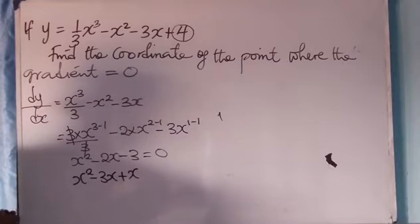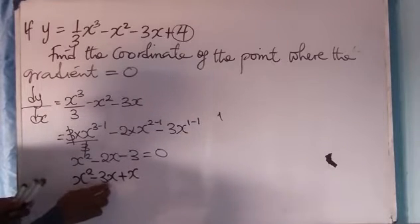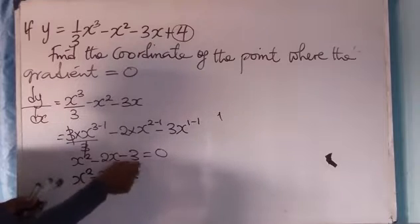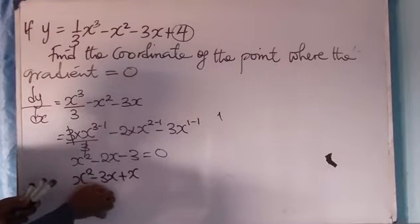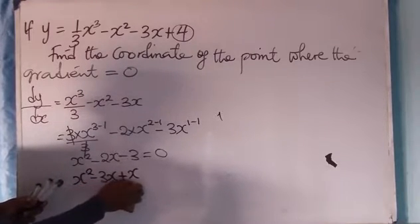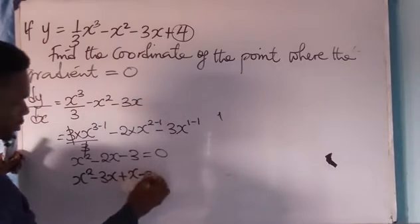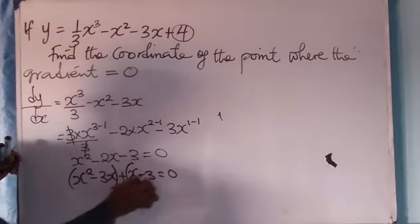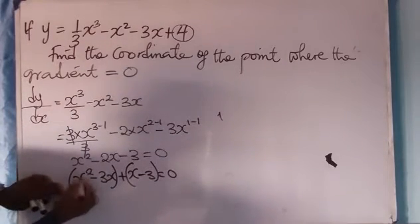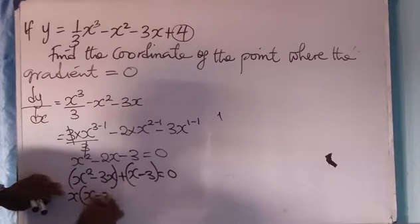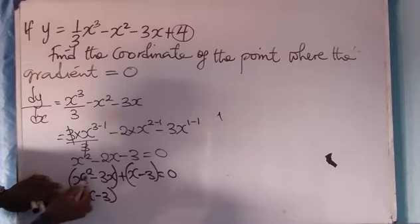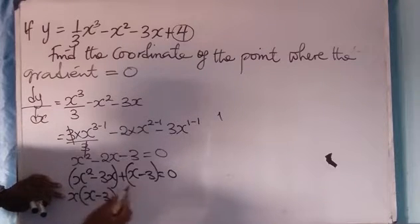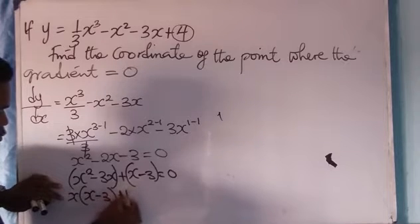So I have x squared minus 3x plus x. Because 3 times 1 is 3, then minus 3x plus x is minus 2x. Then minus 3 equals 0. So, put this into two expressions. Now I'll factorize. I'll have x, open bracket, x minus 3. Because x times x is x squared. Then x times minus 3 is minus 3x.